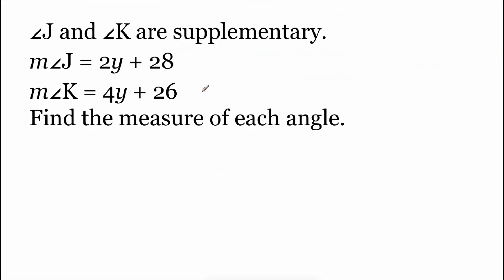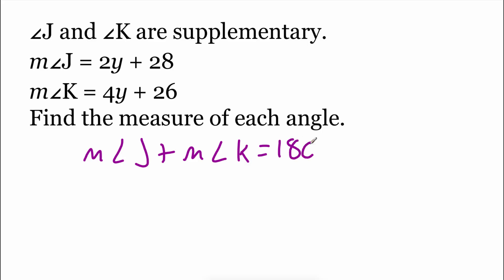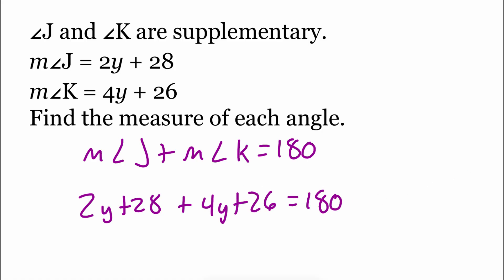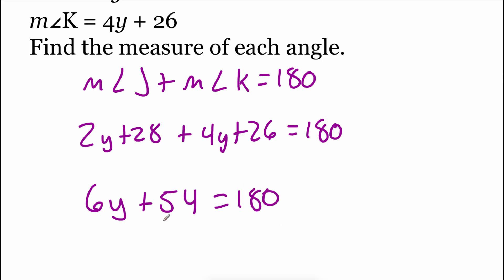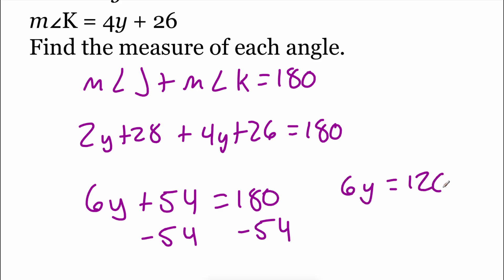In this example, we're told that angle J and angle K are supplementary, so the measure of angle J plus the measure of angle K equals 180 degrees. The measure of angle J is 2y plus 28, and the measure of angle K is 4y plus 26, so we get: 2y plus 28 plus 4y plus 26 equals 180. Combining like terms: 6y plus 54 equals 180. Subtracting 54 from both sides gives 6y equals 126, and dividing both sides by 6 gives y equals 21.